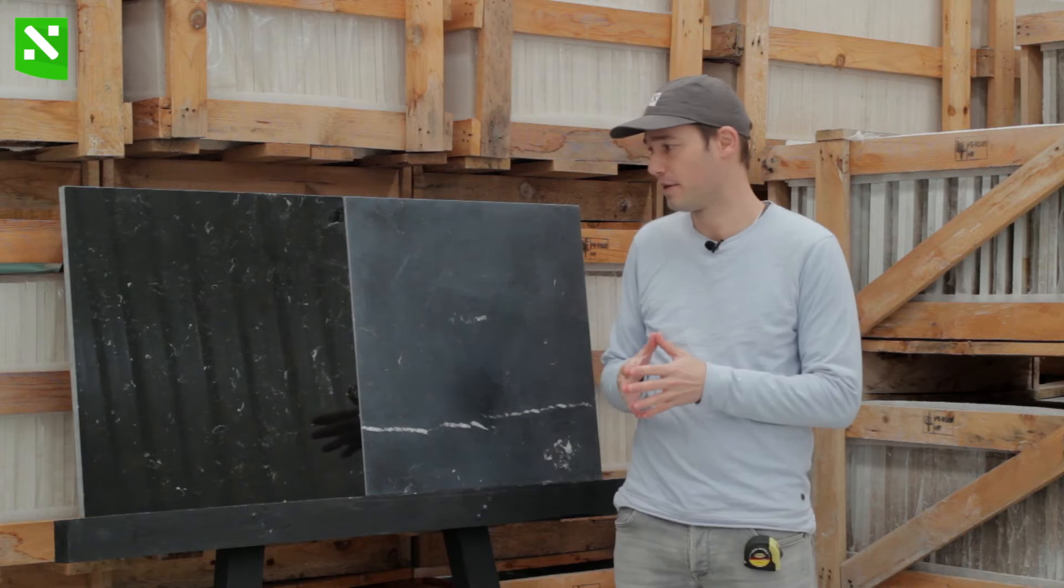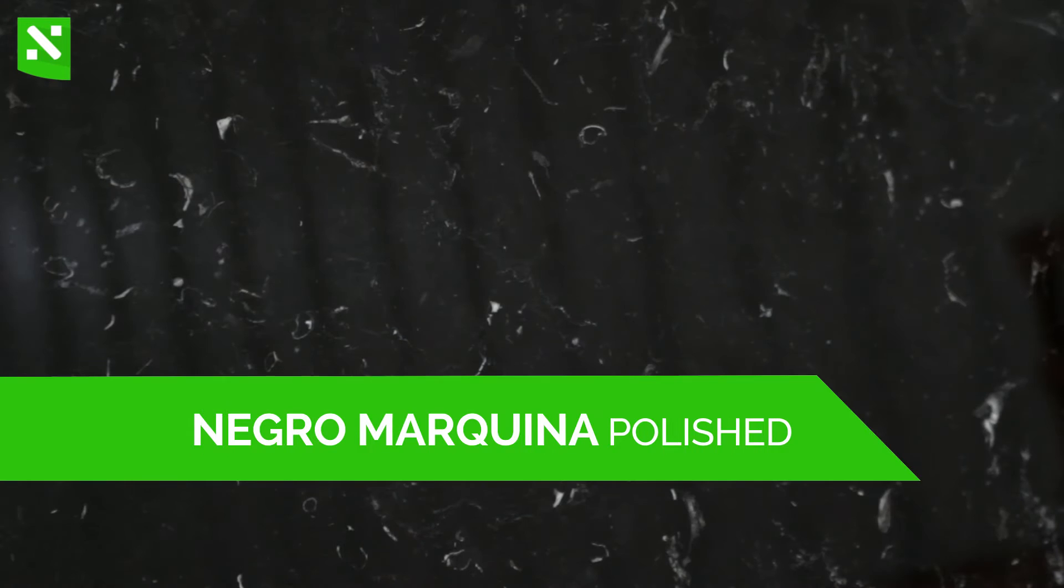It's a black marble, so we are going to explain a bit what you can expect from it. So essentially the Negro Marquina is a black marble, very black, with some occasional white calcite and shells.